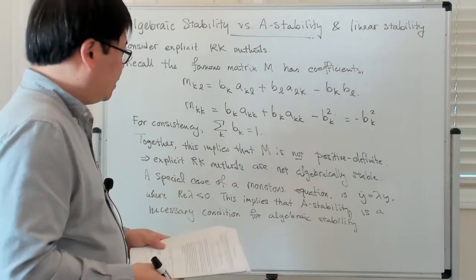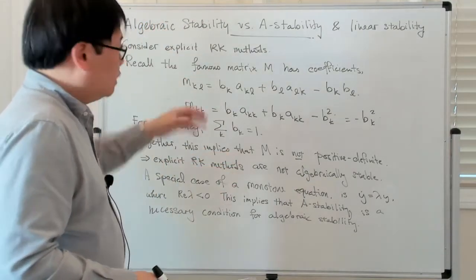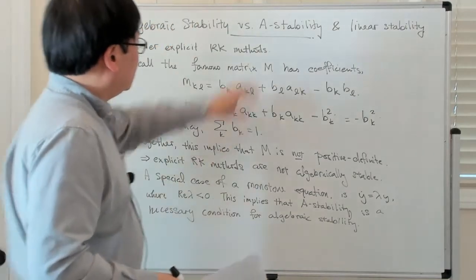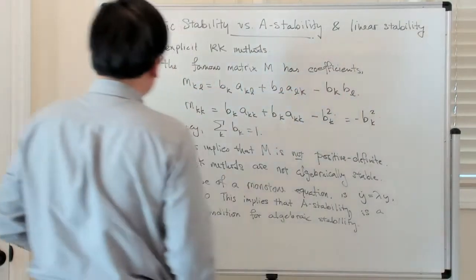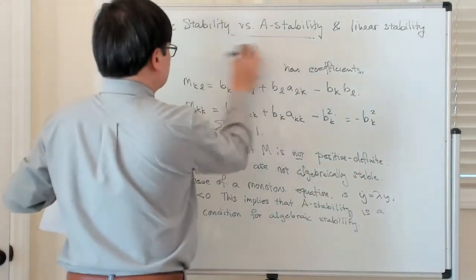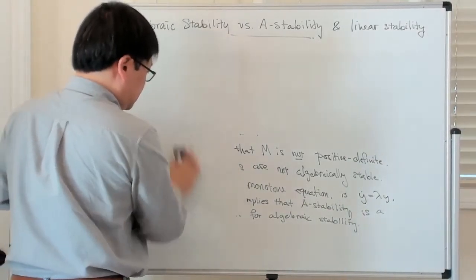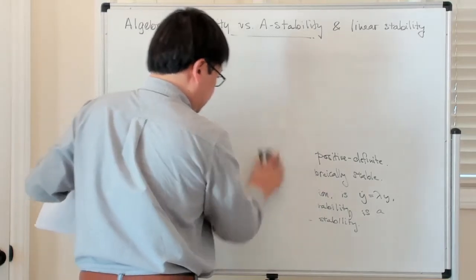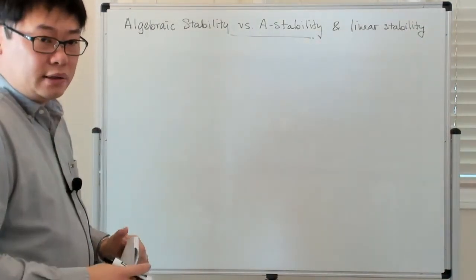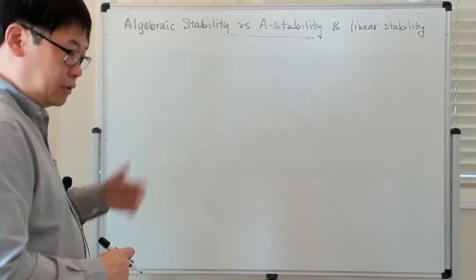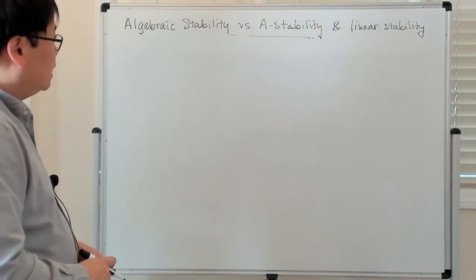Another way of saying this is that algebraic stability implies A-stability, but the converse may not necessarily be true. So we want to show that algebraic stability is a stronger condition than A-stability. We showed earlier that it's not possible for explicit Runge-Kutta methods to be A-stable, so you can deduce that an explicit Runge-Kutta method is not algebraically stable because it's not A-stable.